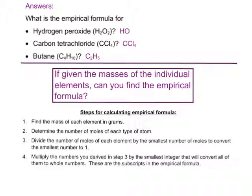Now here are our answers. Let's look at hydrogen peroxide. We need to remember how to write hydrogen peroxide — H2O2. If we write the molecular formula it's H2O2, but if we want to write the empirical formula, we reduce that to simply HO. Carbon tetrachloride — that's a type III compound — has one carbon and four chloride atoms, and it has the same molecular formula as its empirical formula: CCl4. Butane, C4H10, has a different empirical formula; when we divide both numbers by two, we get C2H5 as the empirical formula.